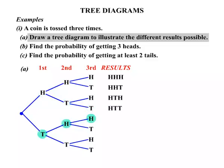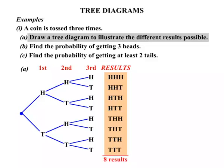Now jumping down here, a tail then two heads. Tail, head, tail. Tail, tail, head. And finally three tails. So they are all our different results. There are eight of them. Eight different results there.